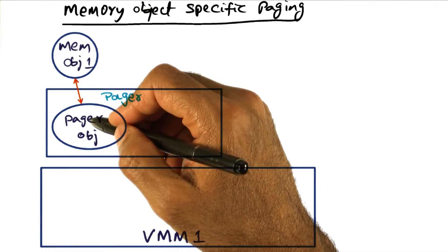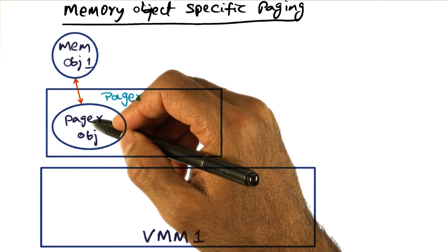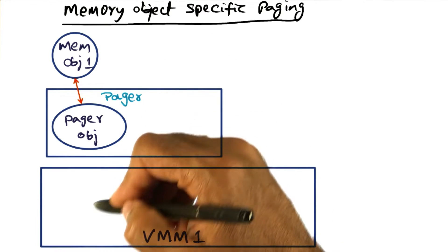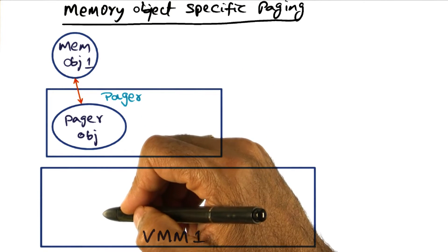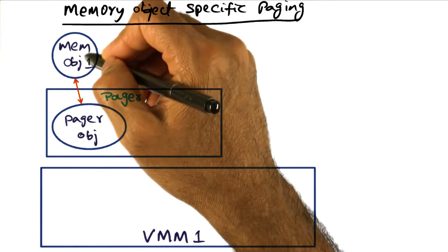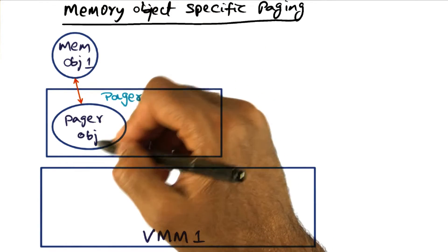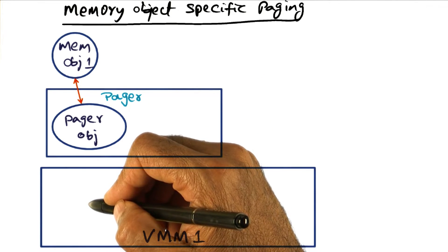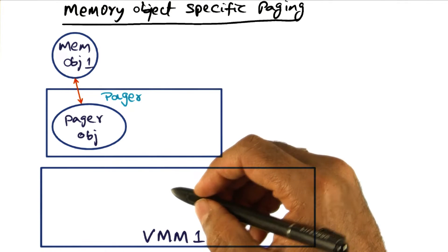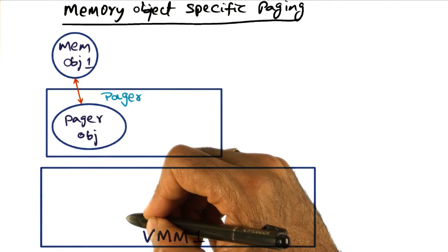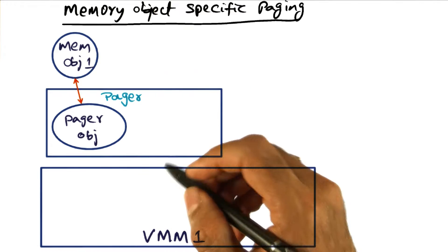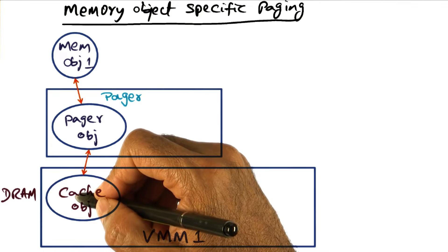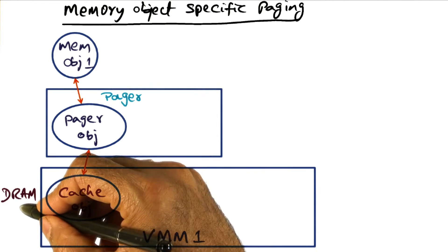A pager object is responsible for making or establishing the connection between virtual memory and physical memory. A portion of the virtual memory — that is, a region of the linear address space — is being mapped to a memory object. It is the responsibility of the pager object to ensure that this memory object has a representation in physical memory when the process wants to access that portion of the address space. So this pager object creates what is called a cached object representation for the memory object in DRAM.